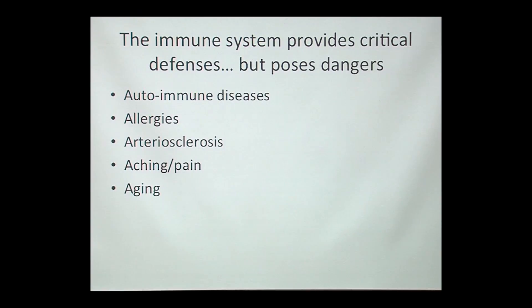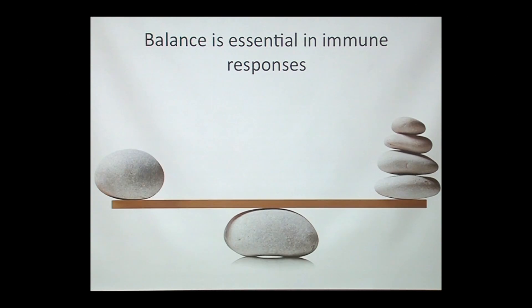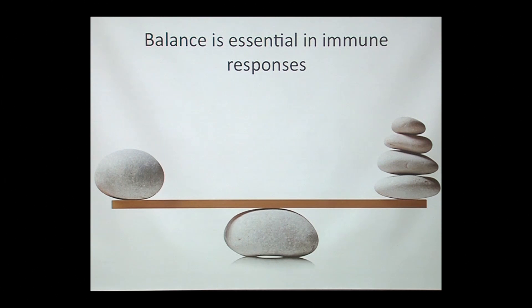Many people think that inflammation is really a central piece of what happens in the aging process. So all of these are things that can happen with an overactive immune system. In putting this all together, balance in the immune system is absolutely critical — you want the right response when it's necessary, you don't want too much response, and when you don't need it, it needs to get turned off.